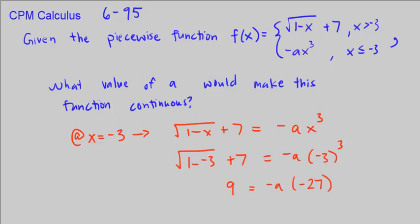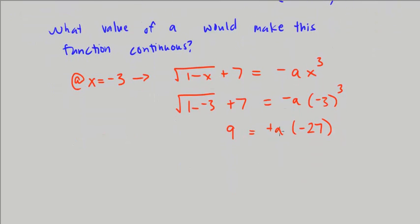When you cube 3, you get negative 27. These negatives cancel. You get 9 is equal to 27a. Divide both sides by 27. You get a is equal to 9 over 27.